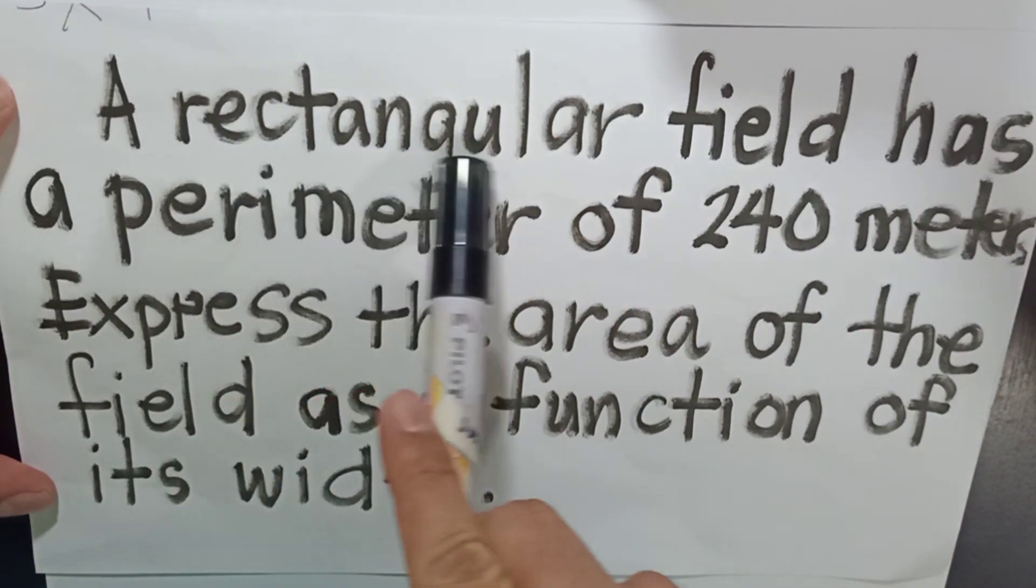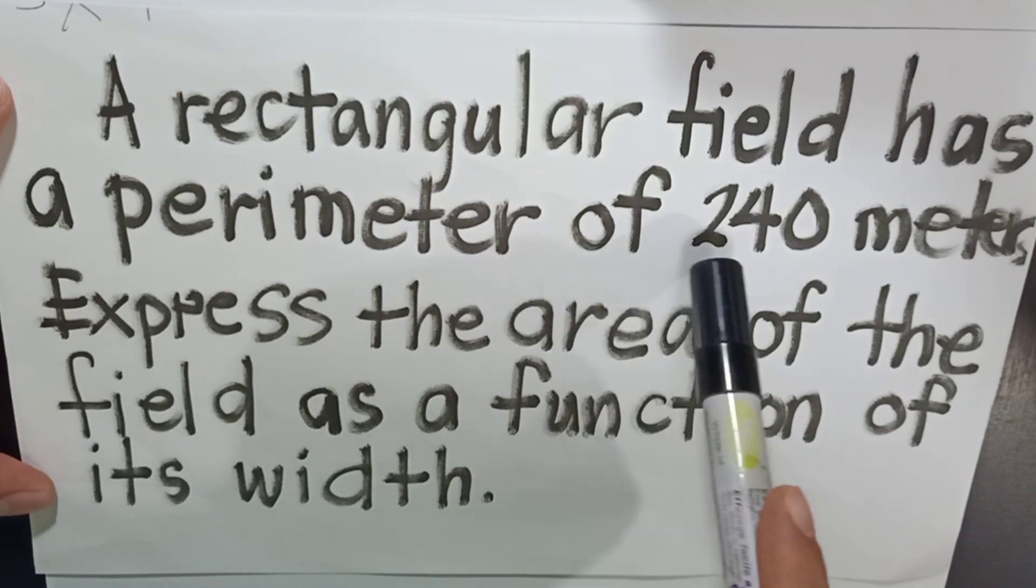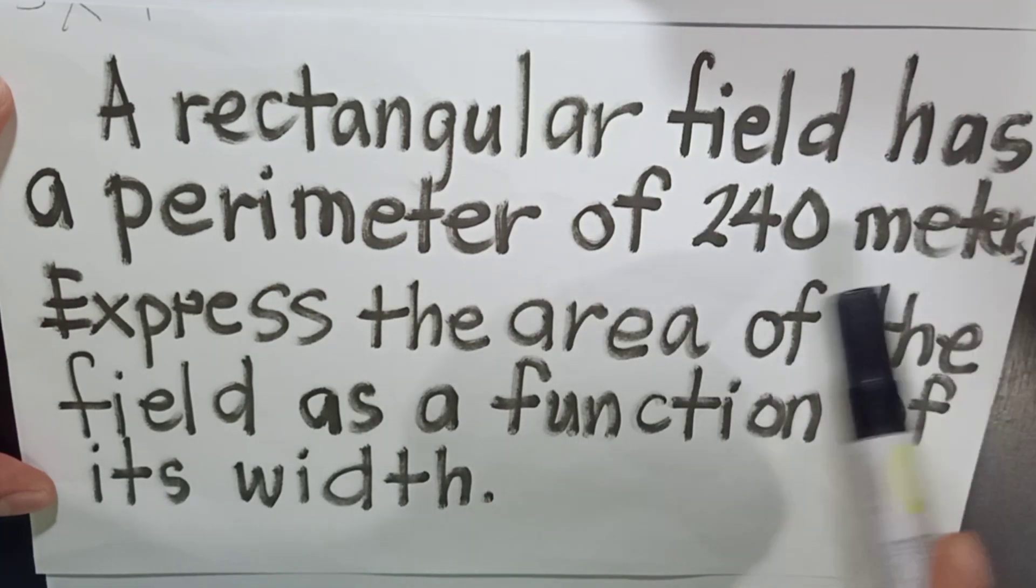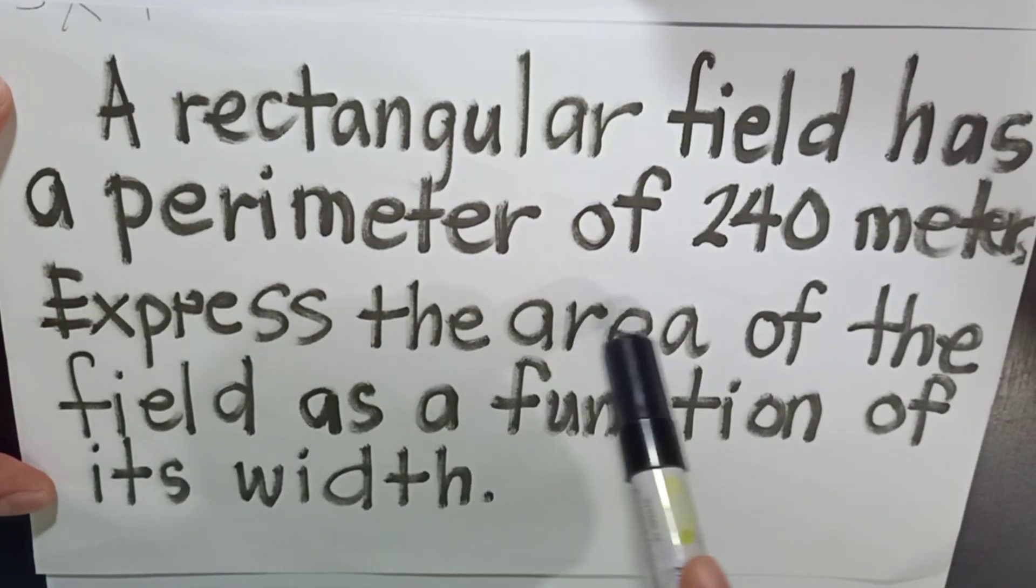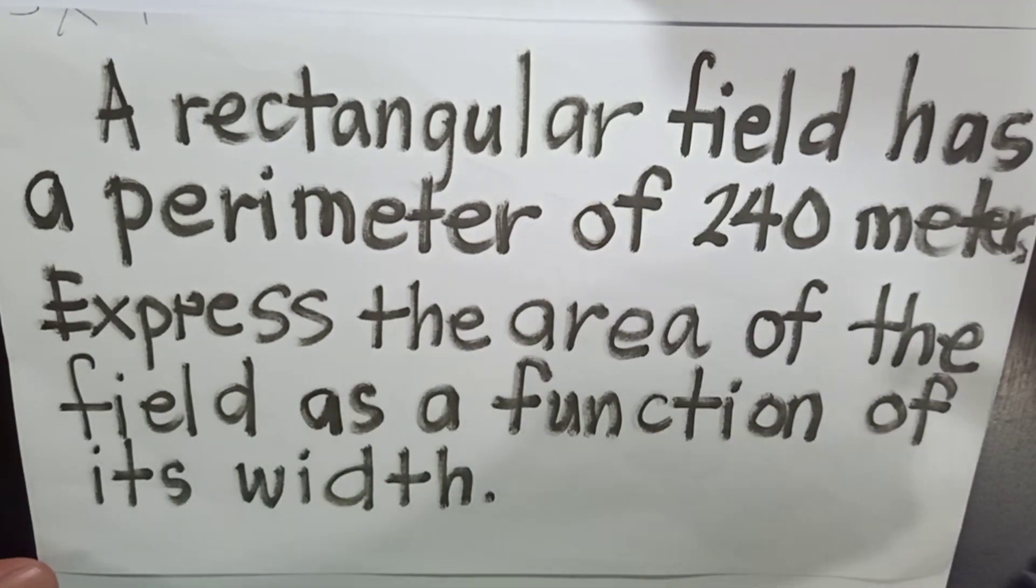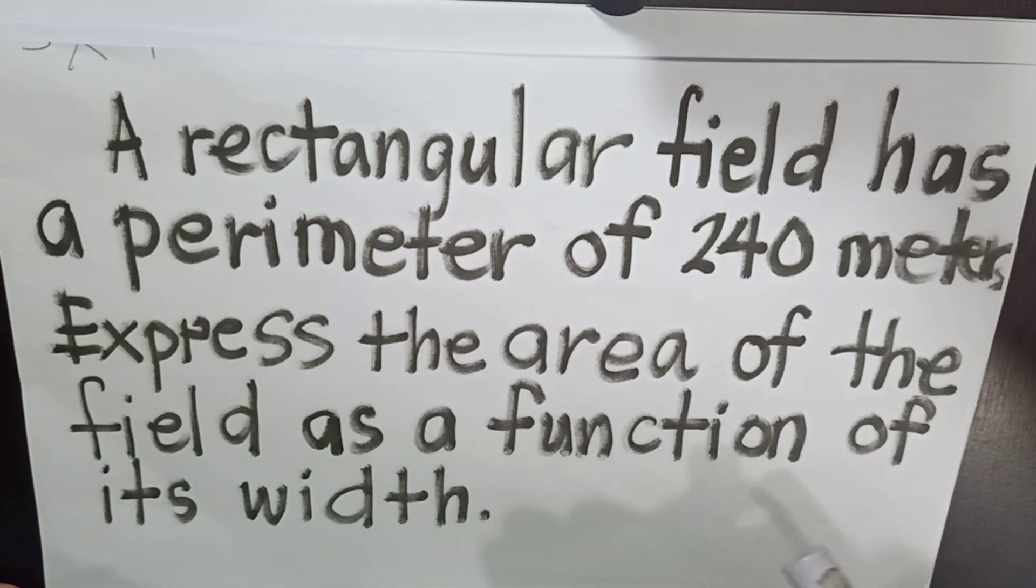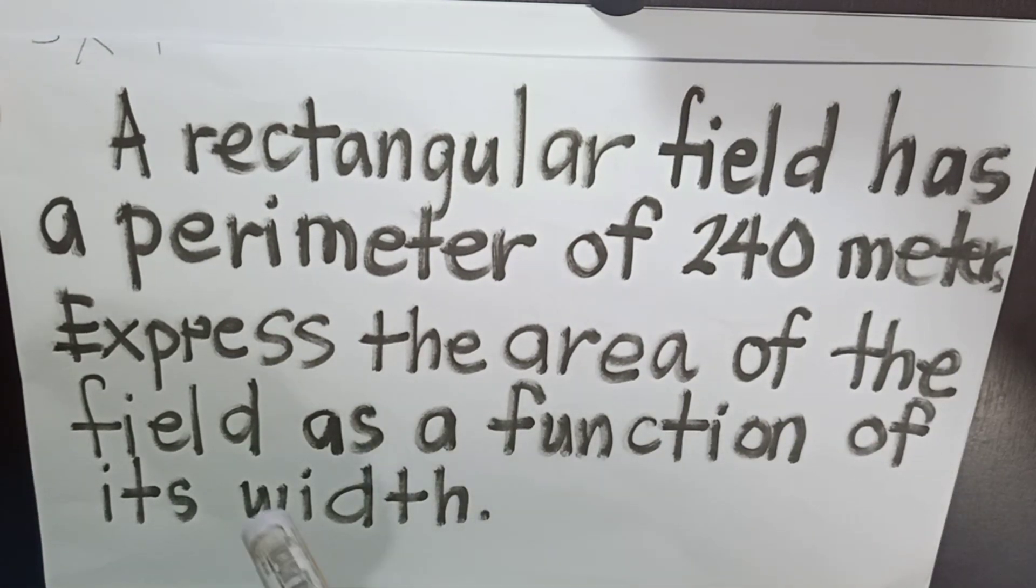A rectangular field has a perimeter of 240 meters. Express the area of the field as a function of its width. In solving problems, what you need to do is to understand the problem itself. You have to read the problem twice or thrice until you get the concept of it.